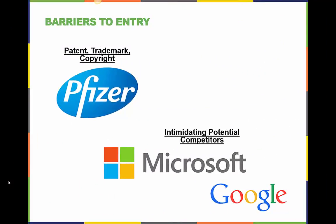Pfizer and other pharmaceutical companies use patents, trademarks, and copyrights to protect their monopoly powers. Large, well-known corporations like Microsoft and Google may use tactics such as intimidation to help protect their monopoly power.